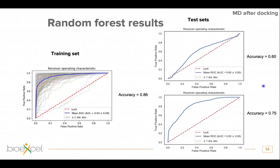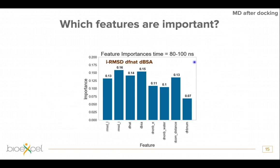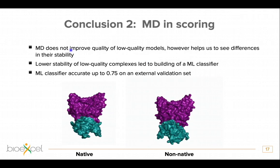We also looked at the individual properties of both test sets. For the test set with lower accuracy, the native and non-native complexes don't behave very differently from each other, which explains the lower score — yet we can still distinguish between them with accuracy 0.60. The random forest classifier can also tell you which features are most important: all features are similarly important, however interface RMSD, change in native contacts, and change in buried surface area are the most important. This is logical — if binding is not stable, the buried surface area will decrease more than for a stable complex.